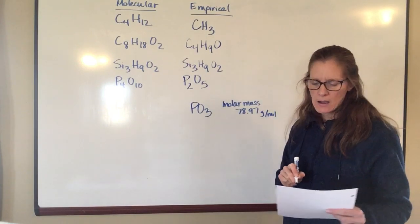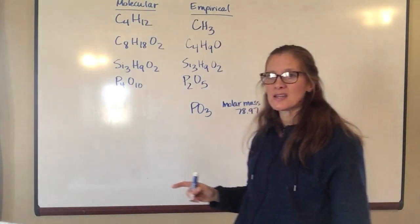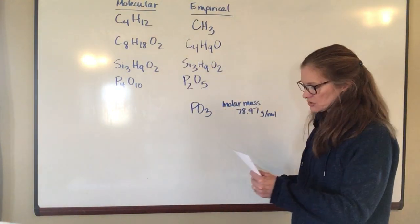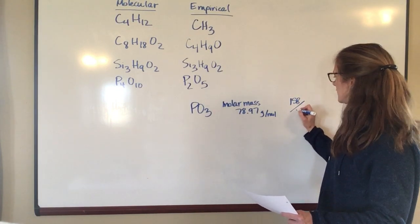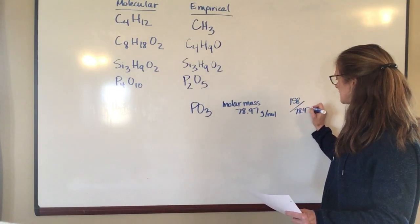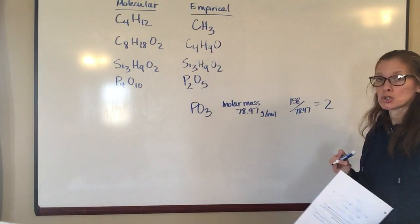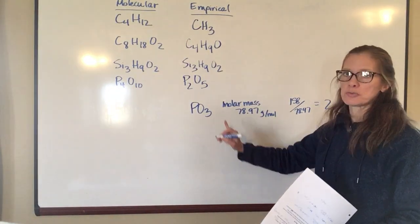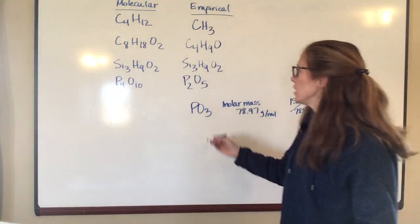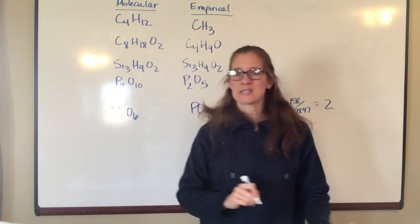Okay now I know that the molar mass for the molecular formula is 158. So if I take 158 and I divide it by 78.97, I come up with, once you round it, you come up with about 2. So what that means then is that you're going to take each of these subscripts and you're going to multiply it by 2. So your molecular formula for this is going to be P2O6.